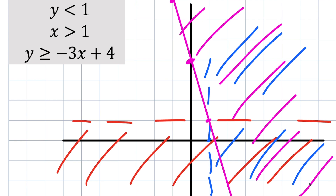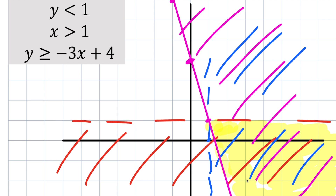Our last step is to see what's common — what area has blue, red, and pink. This area has nothing touching except pink, this only has red, here we have pink and blue, and here we have all three colors — blue, pink, and red. This region right here would be our final answer, and that's it regarding graphing inequalities.